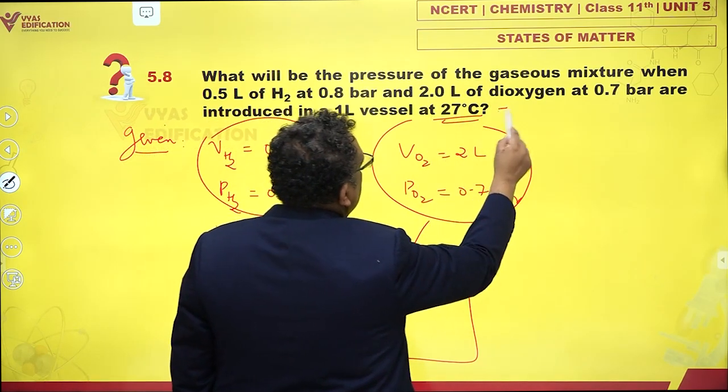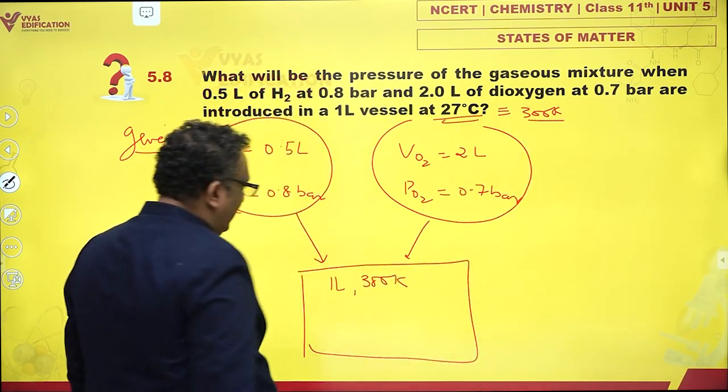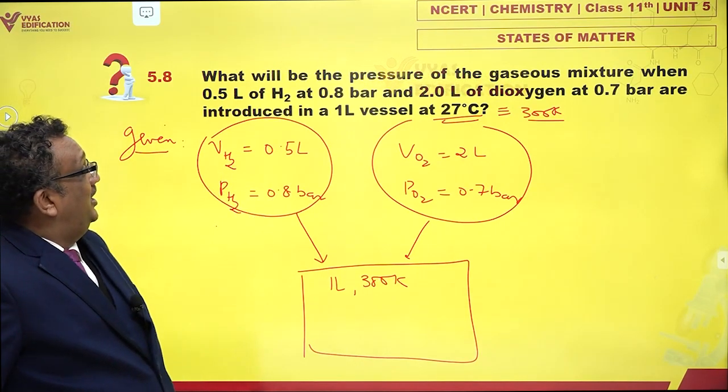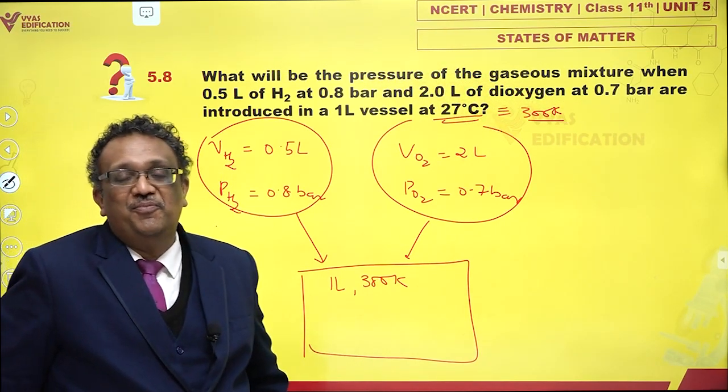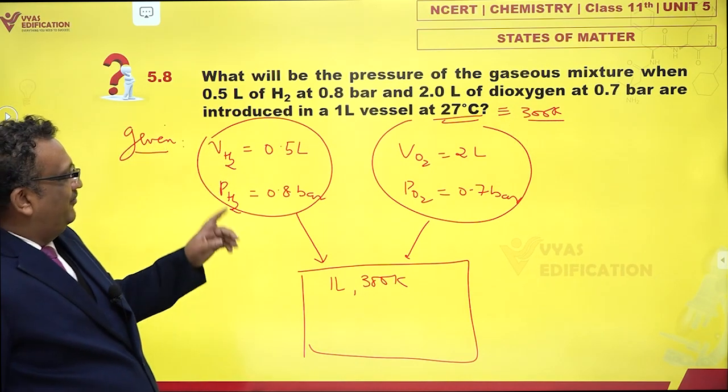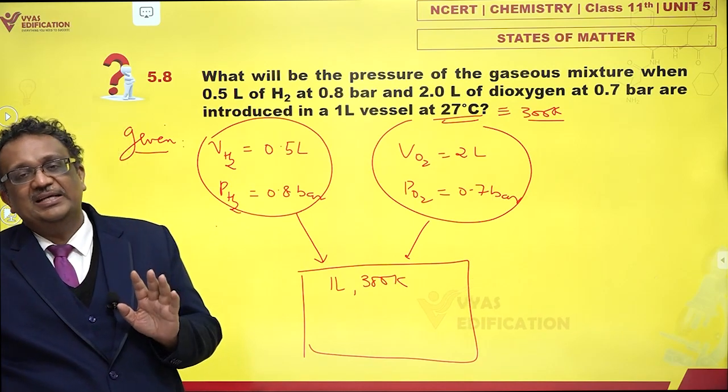In this vessel both gases are filled and I'm supposed to find the final pressure. How do I do that? The way to do this is to look at one gas at a time.